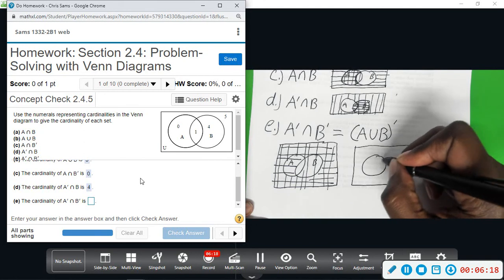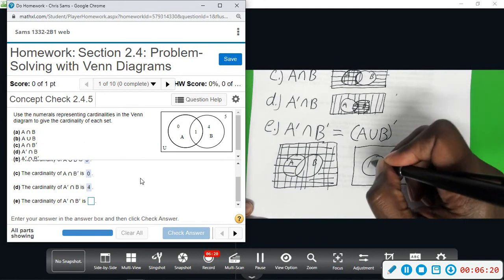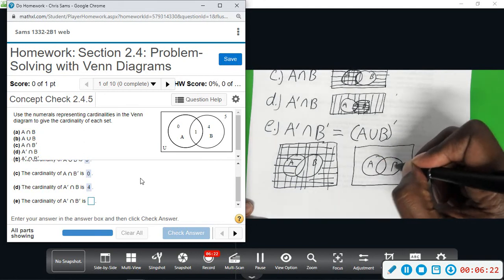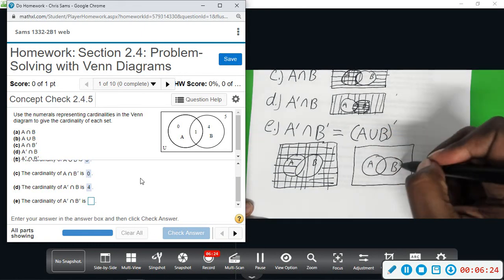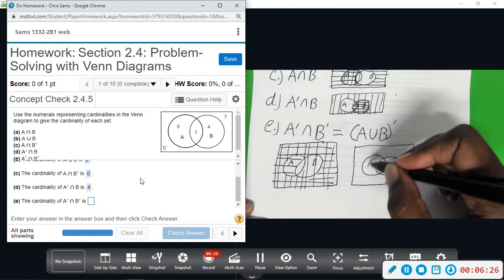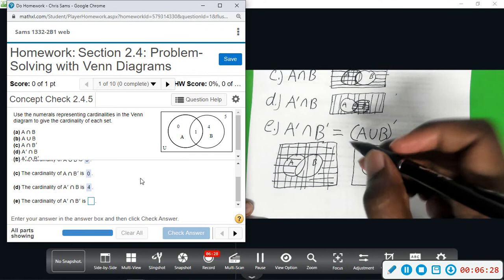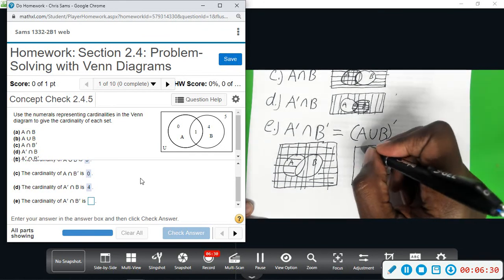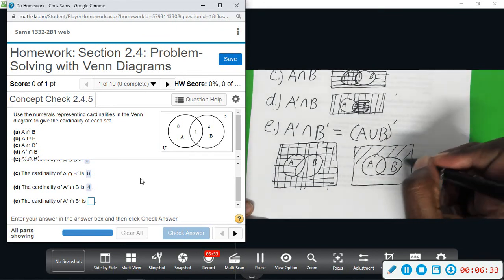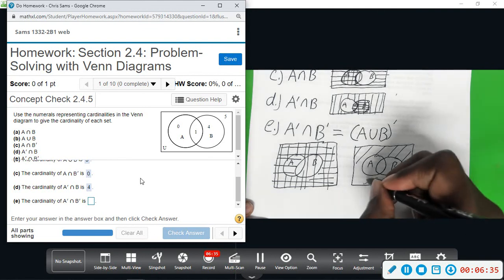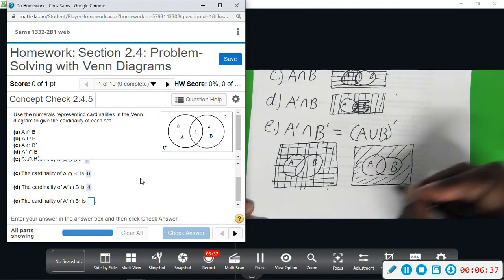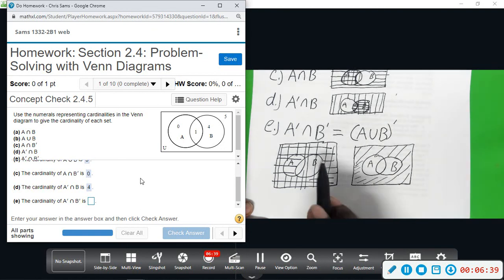Now let me do the other method—it's a lot cleaner and easier to see. A union B is everything in A and B, but we want the complement of A union B. So it's going to be everything on the outside of A and B. This picture is a lot cleaner—you can see it's just the outside. Here it's harder because you've got lines going every which way. So it's the outside, which is 5.